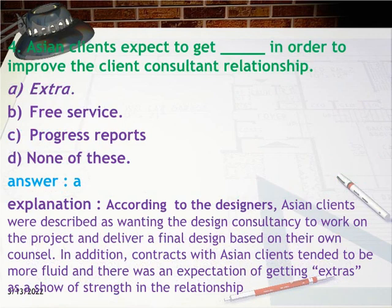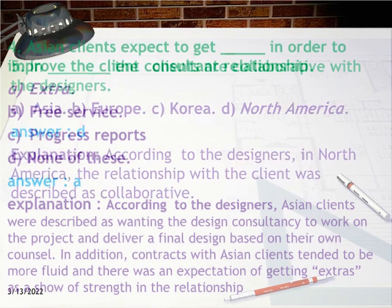Question 4: Asian clients expect to get which of the following in order to improve the client-consultant relationship? Answer: A, extra free service. Explanation: According to designers, Asian clients were described as wanting the design consultancy to work on the project and deliver a final design based on their own counsel. Contracts with Asian clients tended to be more fluid, with an expectation of getting extras as a show of strength in the relationship.